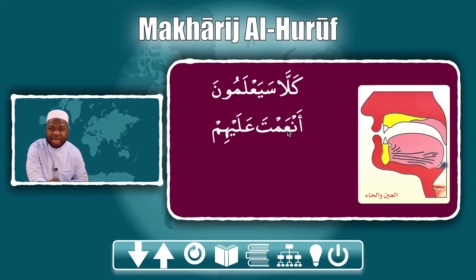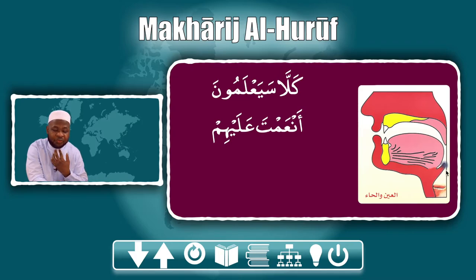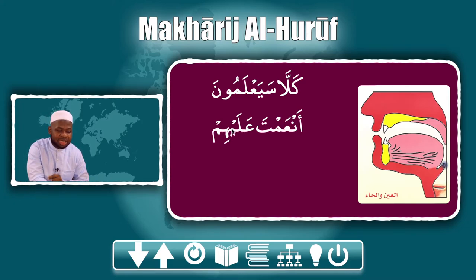Do not say 'an-ʿam-ta alayhim' incorrectly. We say ʿa — it comes from here, from the throat; it doesn't come from the front. An-ʿa... You should feel it here. An-ʿam-ta. When you look at this, you may see some space, but when you feel it yourself, you see that the space is actually very close. Don't say 'an-am-ta alayhim' or 'an-am-ta alayhim' — this may come from the same area more or less, but it is different. An-ʿa...